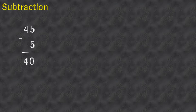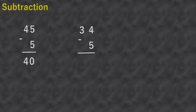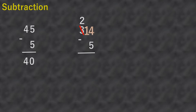We'll try thirty-four minus five. Four minus five is not possible because five is greater than four. All we have to do is borrow one from the three, so the three will become two and four will become fourteen. Fourteen minus five equals nine, and then bring down two. So thirty-four minus five equals twenty-nine.